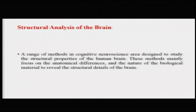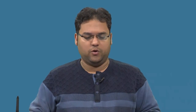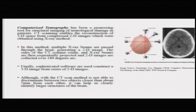One of the main methods that has been instrumental in getting a structural overview of the brain is computerized tomography. CT scanning, as it is popularly known, has been a pioneering tool for structural imaging of neurological damages in patients. CT scanning enables reconstruction of a 3D image of the brain by combining several 2D images obtained using X-ray methods. Multiple X-ray beams are passed through the head, each generating a separate 2D image.